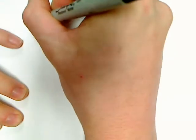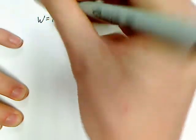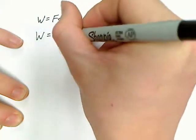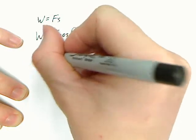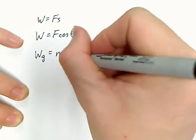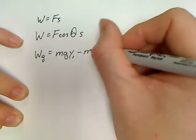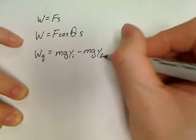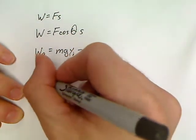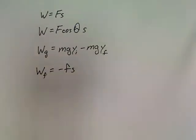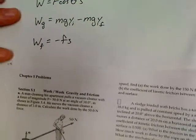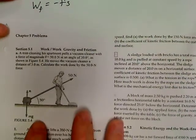Our new equations are work equals Fs, W equals F cosine theta s, work done by gravity is equal to mg y_initial minus mg y_final, and work done by friction is equal to negative Fs. So, there's our new equations. Let's do this first example that y'all have.